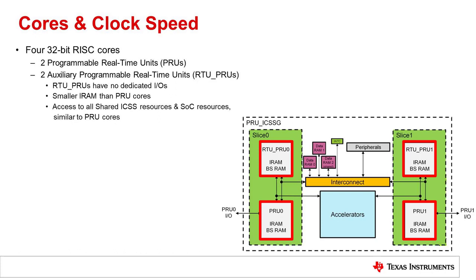This enhancement allows the PRU ICSSG to have additional processing power and flexibility. On the PRU ICSSG, the PRU and RTUs are comprised of the same RISC core — they just have different resources, connections, and accelerators. For example, the RTUs don't have access to any external general-purpose input or output pins. Given this, the RTUs are strictly available for data processing, while the PRUs can be used for IO control and/or data processing.